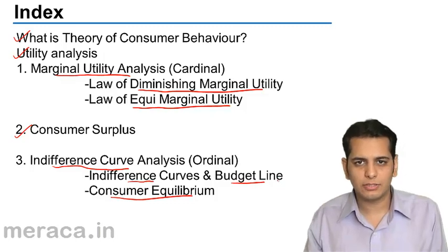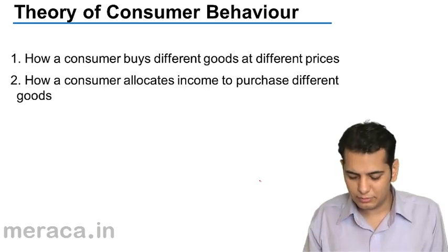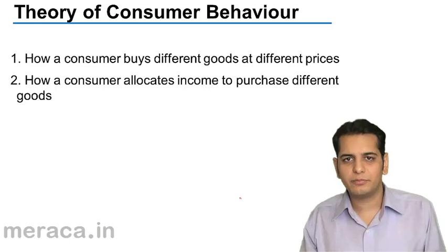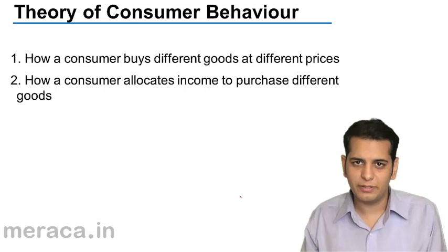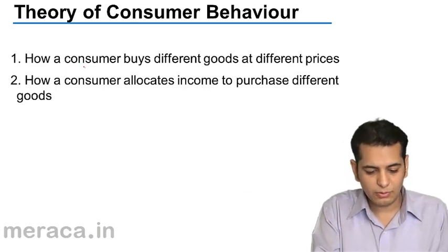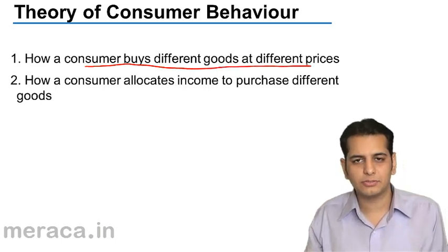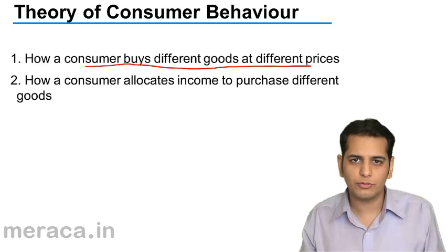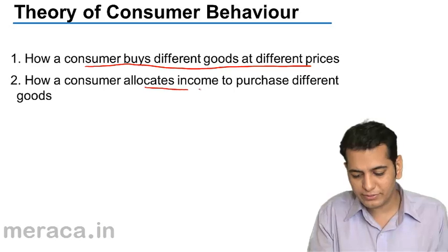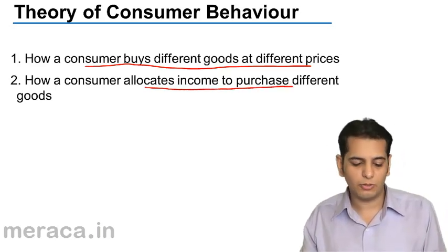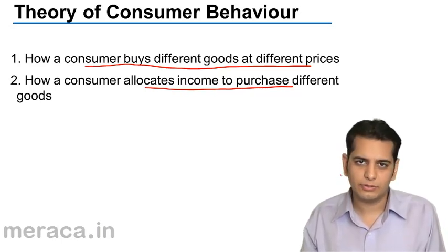So let's get started. Theory of consumer behavior — as I've already told you, the theory of consumer behavior endeavors to know how a consumer would behave in the market, how a consumer would buy different goods at different prices, and what is the quantity of goods that he'll buy. Second, how a consumer allocates his income to purchase different commodities or different goods. These are the two things that we study in this chapter.